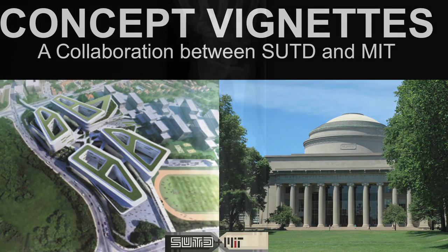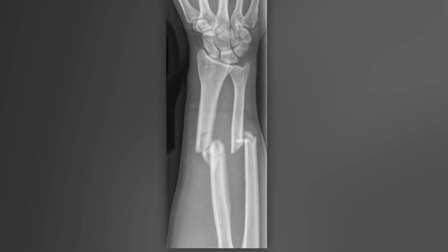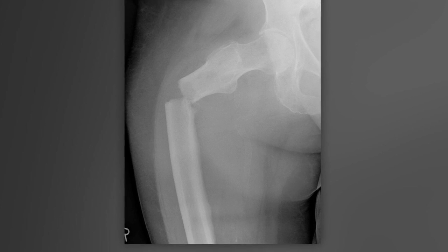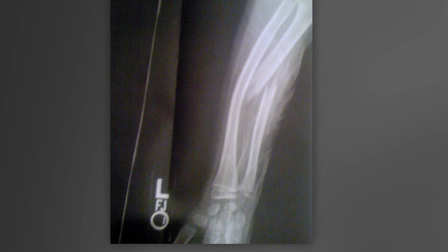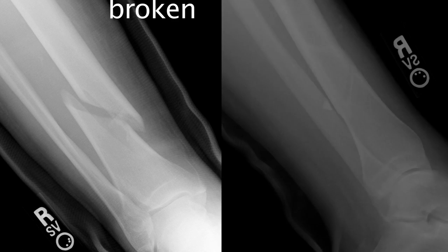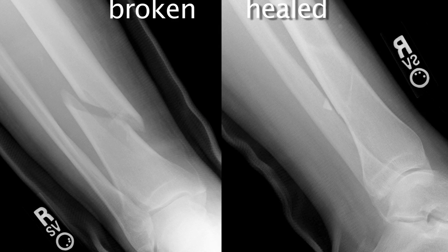82% of soldiers in battle suffer from traumatic limb injuries. Many of these injuries are large bone defects. Engineers at MIT are trying to create materials that mimic the function of the bone's natural healing processes. The structure and properties of these materials promote bone regeneration.